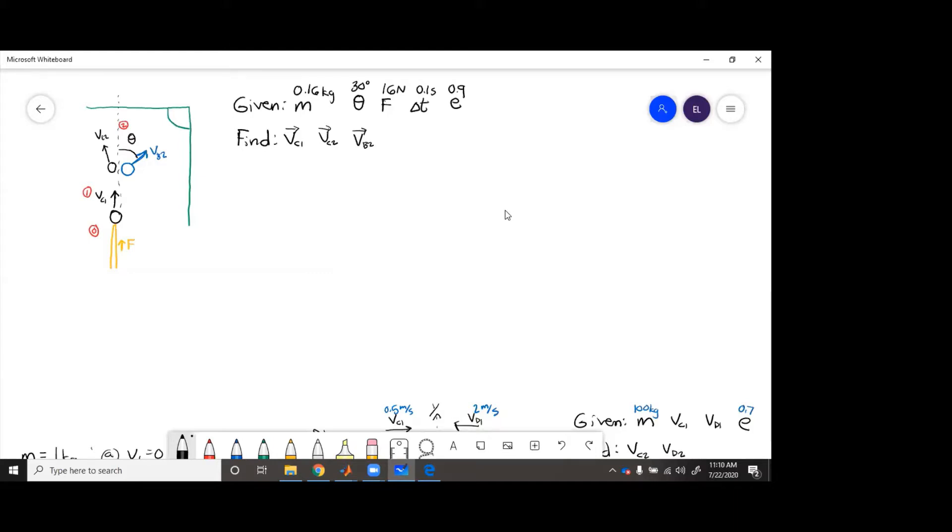So we've got our diagram. The next thing we need to do is assign a coordinate frame. So we need to figure out what is line of impact? What is plane of contact?